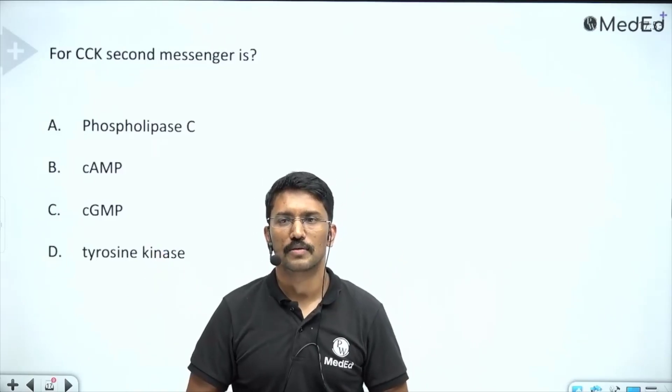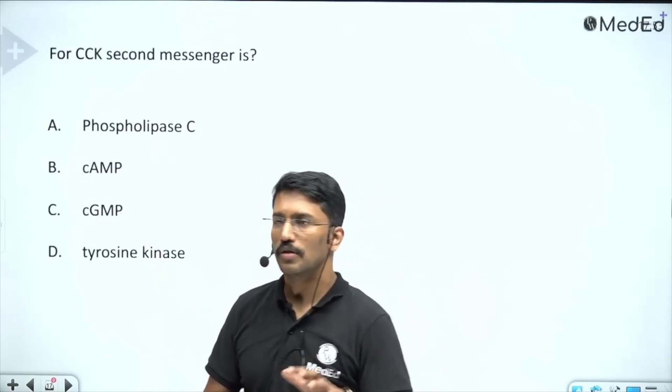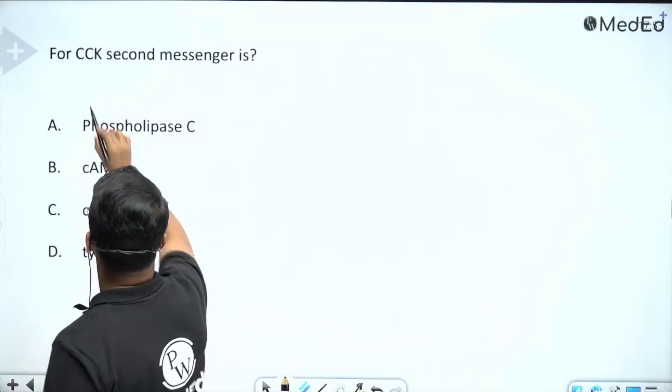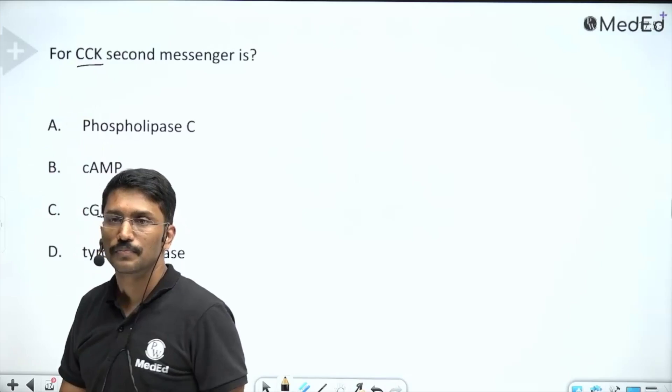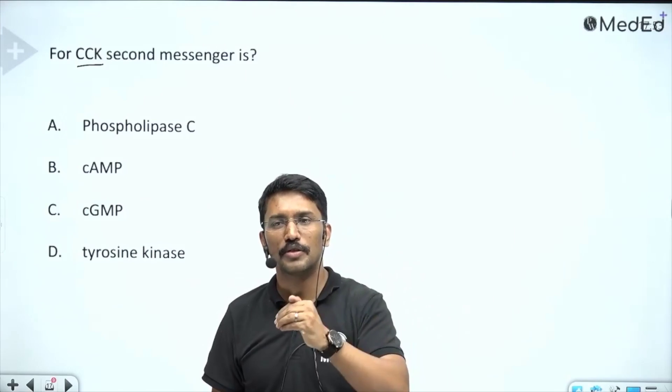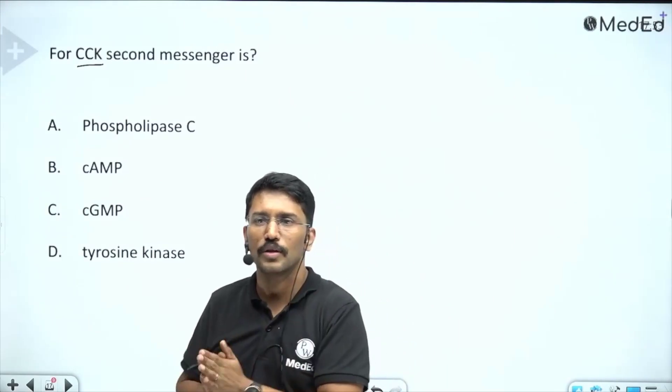For CCK, the second messenger system is... What is CCK? Cholecystokinin. What is its function? Cholecystokinin's main function is to stimulate gallbladder contraction and facilitate expulsion of bile from the gallbladder into the duodenum.